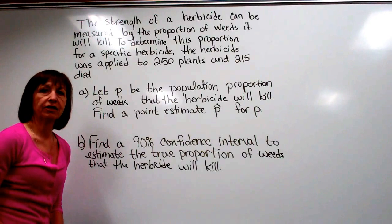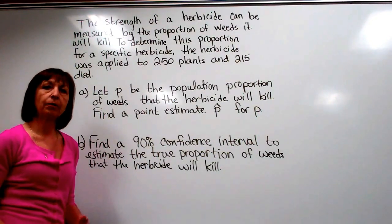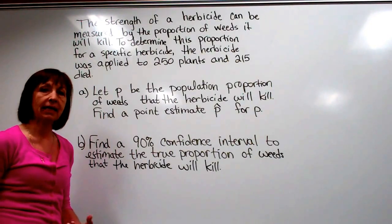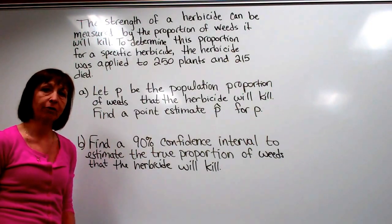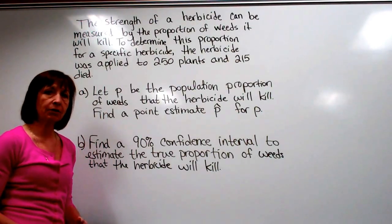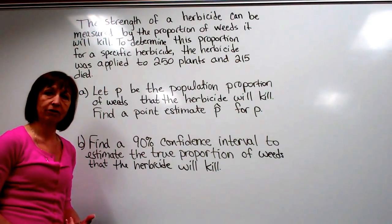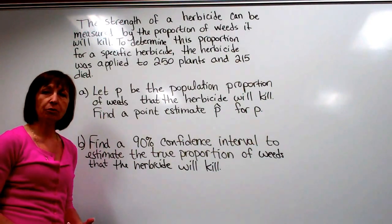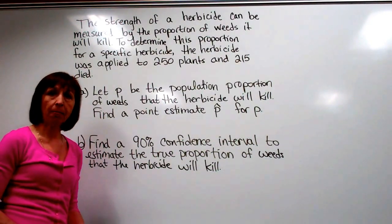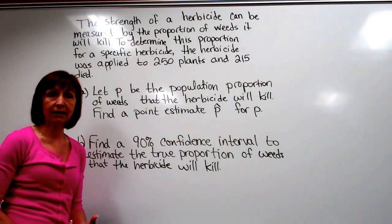When working with inferential statistics, we are trying to make judgments about our population information based on information we gather from the sample. In chapter 7 of the textbook, we're going to look at confidence intervals of population parameters: the population proportion, the population mean, and the population variance.